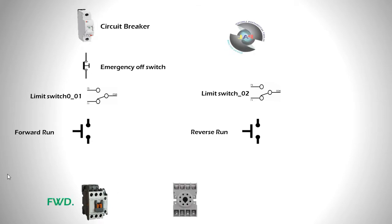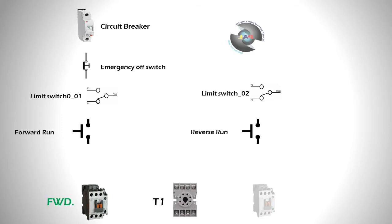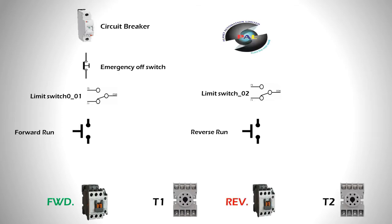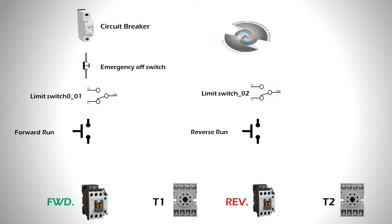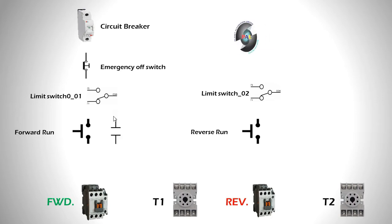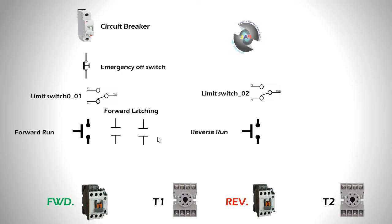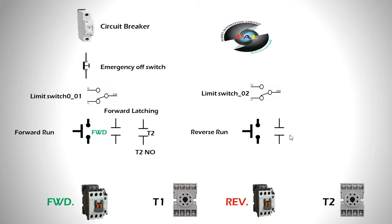Next is the magnetic contactor for forward. This is the timer, which maintains your time for the forward run, then goes to the reverse condition for the magnetic contactor. Basically two timers are used in this project. This is the reverse condition and this is the forward condition — timer T1 and timer T2. This is the NO for the latching point. This is the forward latching and this is T2 NO.